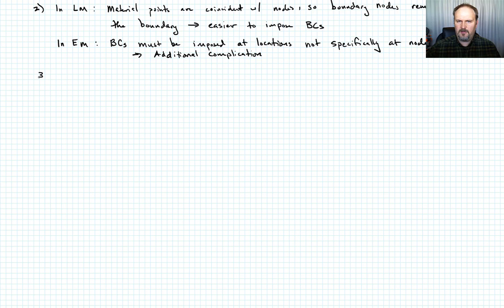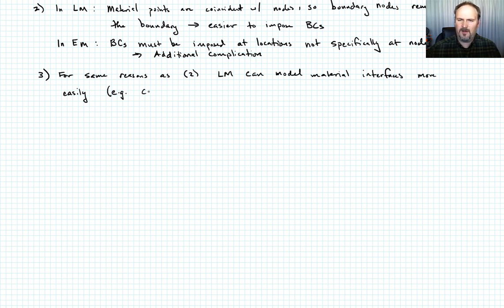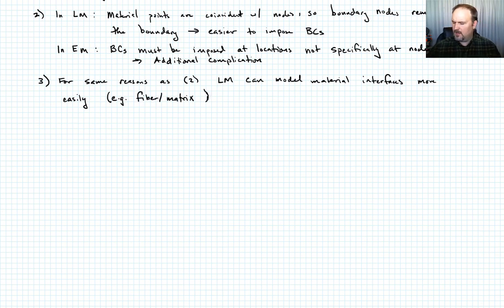This makes it easier to impose boundary conditions. If I had some sort of a boundary condition on this edge of the Eulerian mesh and the deformation took place such that the material moved away I'd actually have to move the boundary condition off the nodes. In Eulerian meshes the boundary conditions must be imposed at locations not specifically at the nodes. This is an additional complication. Part three follows on two for the same reasons: Lagrangian meshes can model material interfaces much better. For example if you're doing composite modeling and you want to see a fiber matrix interface be modeled.